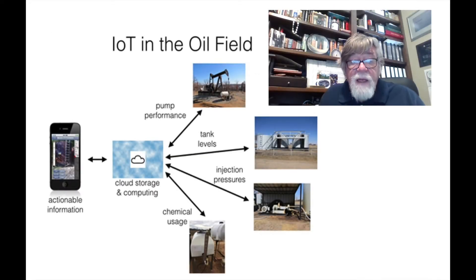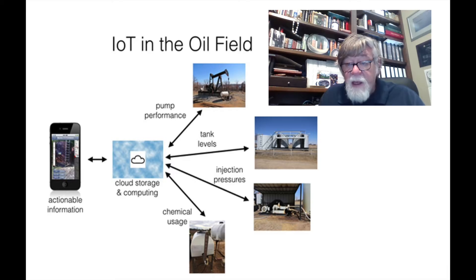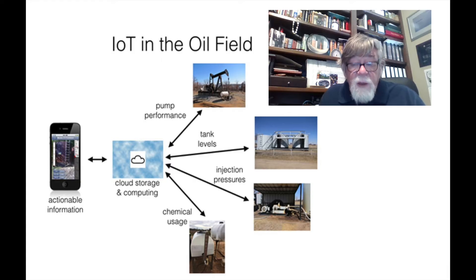Translating that to an oil field picture — IoT in the oil field means sensors on artificial lift units trying to improve pump performance, sensors on tank levels so that we know when we have to come in and remove wastewater or crude if our way of transporting that is by truck. We're measuring injection pressures, so it isn't just on producers. In fact, a lot of the most instrumented wells in an oil field will be in a secondary recovery setup on the injector wells, as well as chemical usage. All of this — through edge computing, new sensors, cloud storage and computing, and telecommunications — can be put into actionable information.